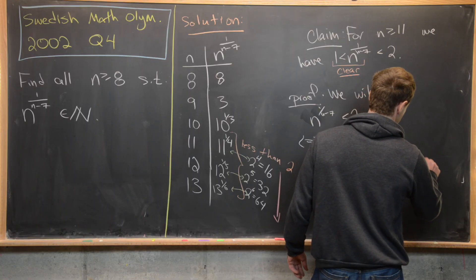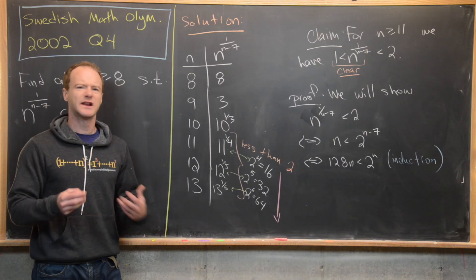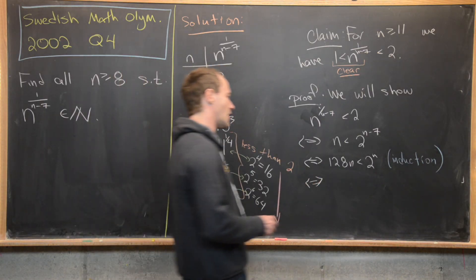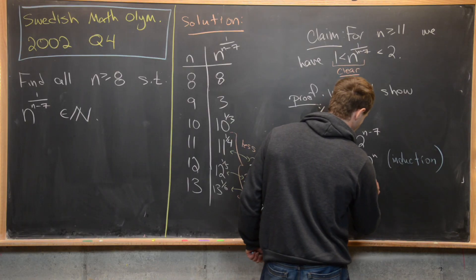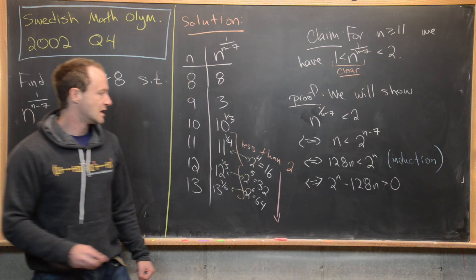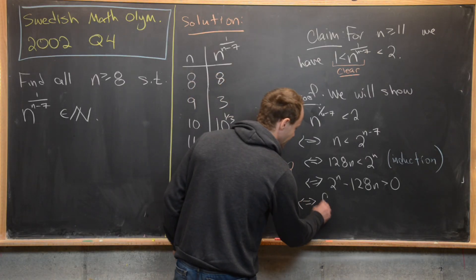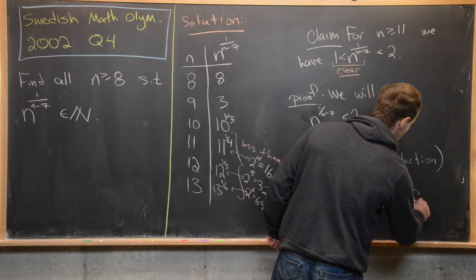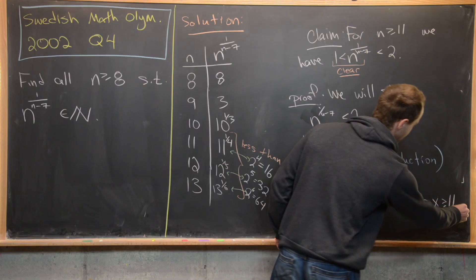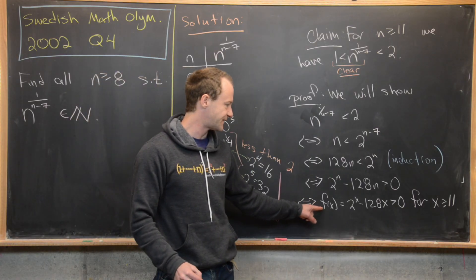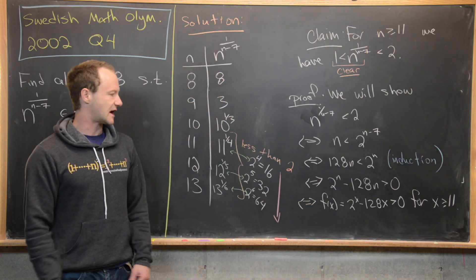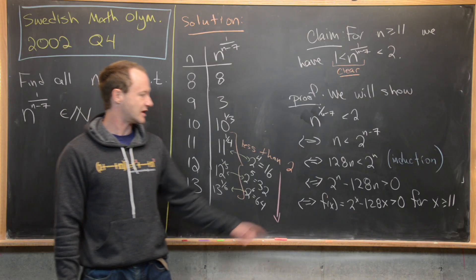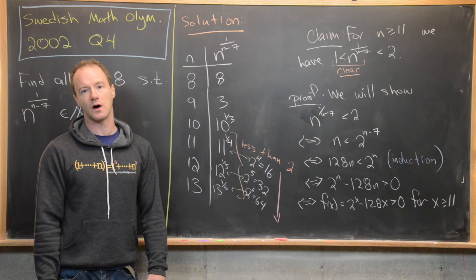We reformulate: showing 128n < 2^n is equivalent to showing 2^n − 128n > 0, which means the function f(x) = 2^x − 128x is positive for x ≥ 11. If we can show f is always positive for x ≥ 11 on the reals, it follows for natural numbers n ≥ 11, and our goal inequality is satisfied.